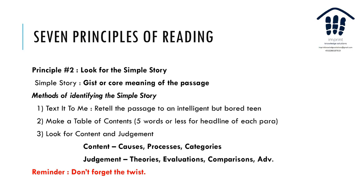Second principle: look for the simple story — the core meaning of the passage. Can you retell the passage in ten lines, or even in five words? Make a table of contents with five words or less for each paragraph. Look for content and judgment: what causes, processes, categories, theories, evaluations, and comparisons are happening in the passage?